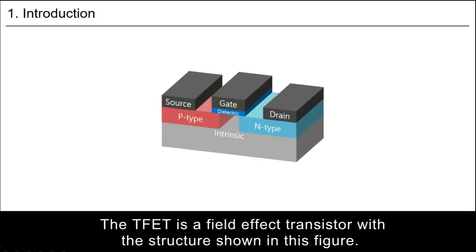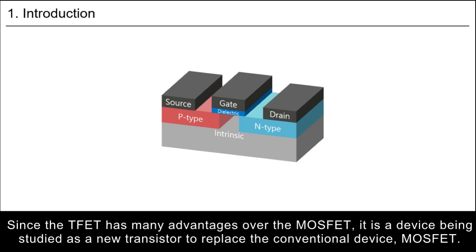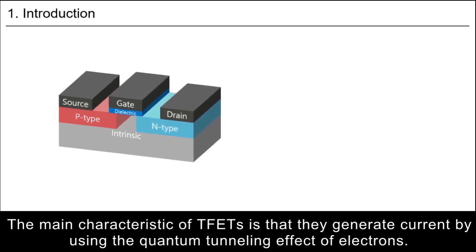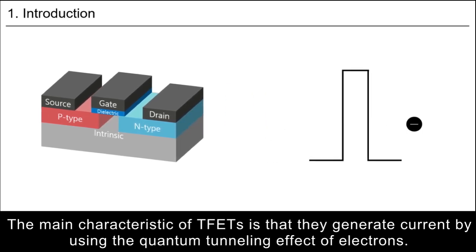The TFET is a field effect transistor with the structure shown in this figure. Since the TFET has many advantages over the MOSFET, it is a device being studied as a new transistor to replace the conventional MOSFET. The main characteristic of TFETs is that they generate current by using the quantum tunneling effect of electrons.